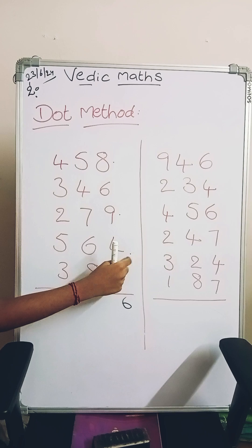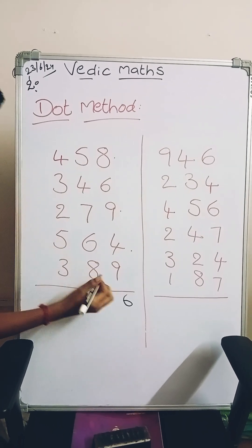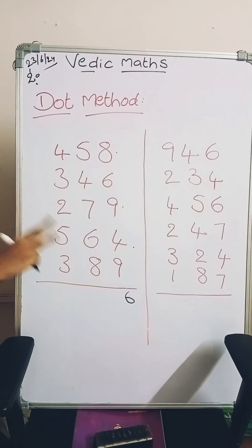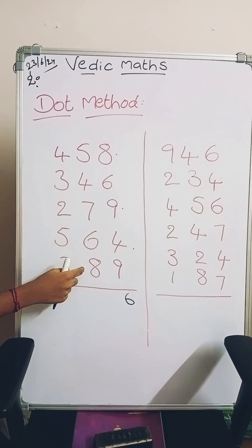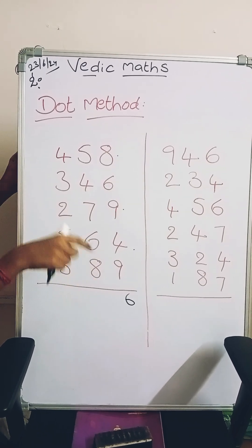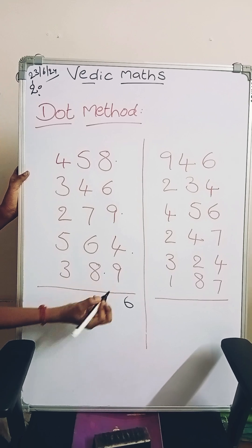And count the dots. 1, 2, 3. We have 3 dots, so keep 3 in your mind. So 3 plus 8 is 11. n number is 1, and it has 2 digits. Put a dot.